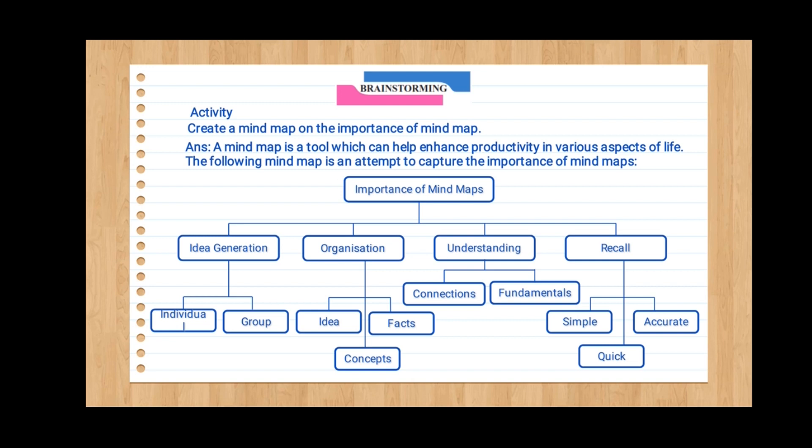Now let's look at one solved brainstorming activity from the text: Create a mind map on the importance of mind maps. A mind map is a tool which can help enhance productivity in various aspects of life. The mind map is divided into four branches: Idea Generation — further divided into individual and group; Organization — divided into ideas, concepts, and facts; Understanding — about connections and fundamentals; and Recall — giving ideas about simple, quick, and accurate recall.